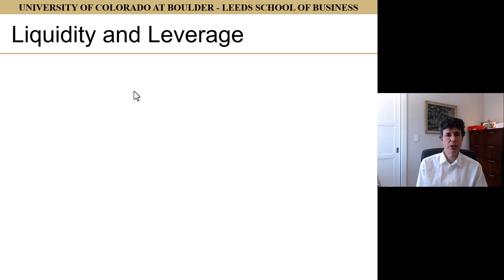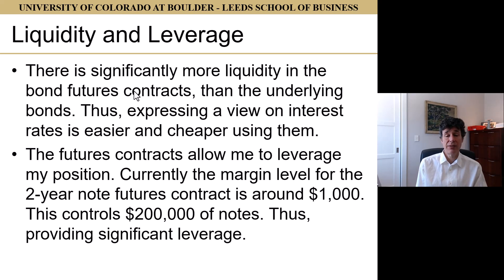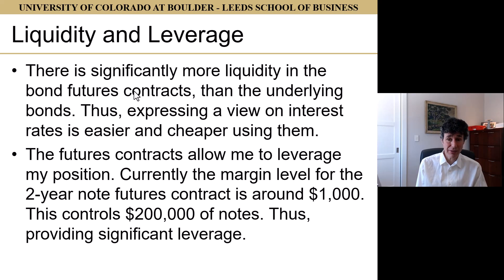Two main reasons. First is liquidity: there is significantly more liquidity in the bond futures contracts than in the underlying bonds themselves, so it's easier and cheaper — more liquidity typically means tighter bid-ask spreads — to express a view on interest rates through bond futures. Second is leverage: futures contracts allow you to leverage your position. Currently the margin level on the 2-year note futures contract is around $1,000, and this $1,000 controls $200,000 of notes, giving us significant leverage.